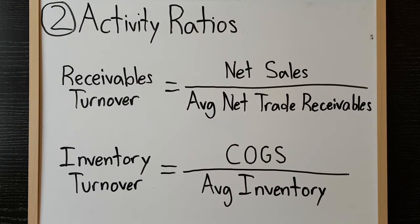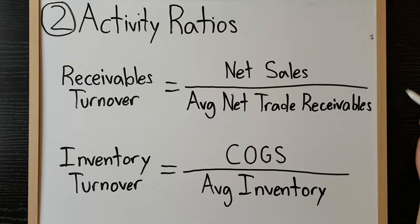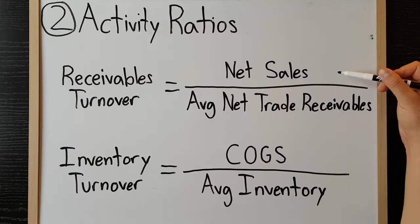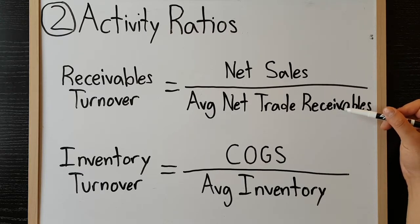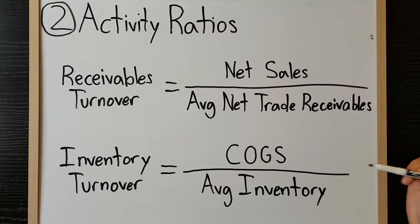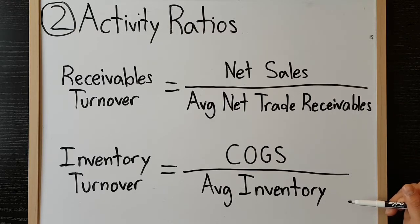Activity ratios measure how effectively a company is using its assets and also how quickly these assets are being realized. Two common activity ratios are receivables turnover, calculated as net sales over average net trade receivables, and inventory turnover, or cost of goods sold divided by average inventory.